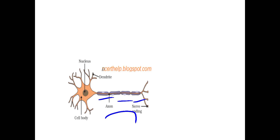Moving on to animal tissues: there are four different types — epithelial tissues, connective tissue, muscular tissues, and nervous tissues. Lastly, we studied nervous tissues. Nervous tissues help in the generation and conduction of nerve impulses. The speciality of these cells is that they can get excited and stimulated, producing nerve impulses which are transported to different parts of the body. Hope everyone understood.